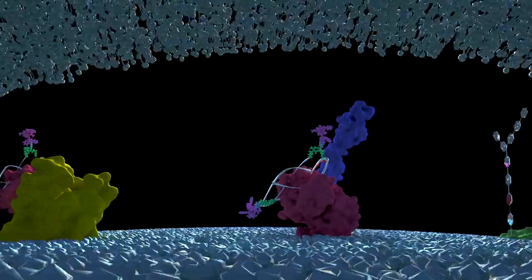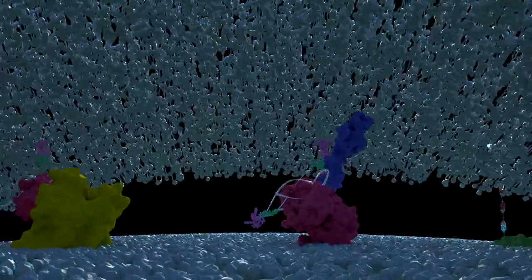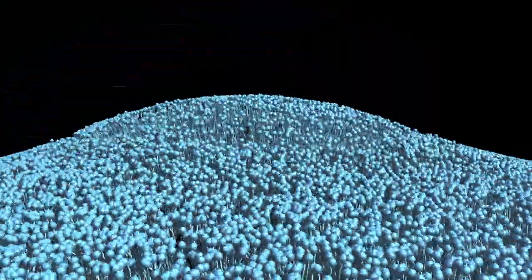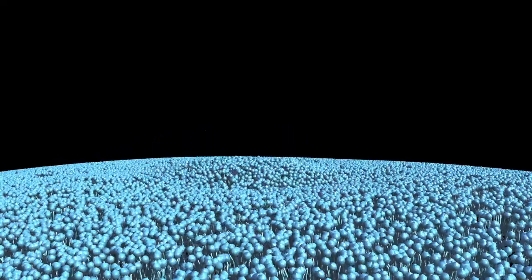Macropinocytosis is one type of endocytosis that uptakes the extracellular fluid. It forms the macropinocytosis, or vacuole, and transports the conjugate into the cell.